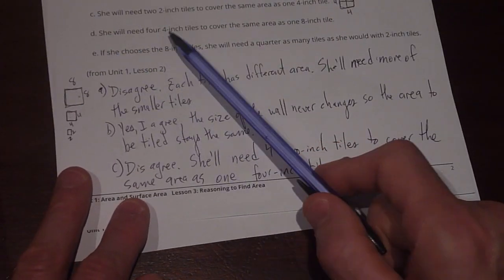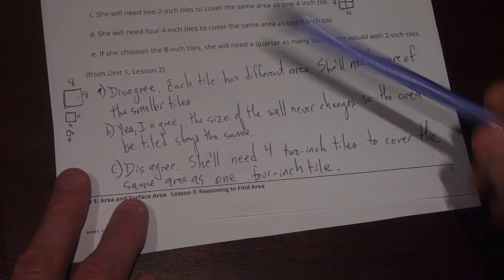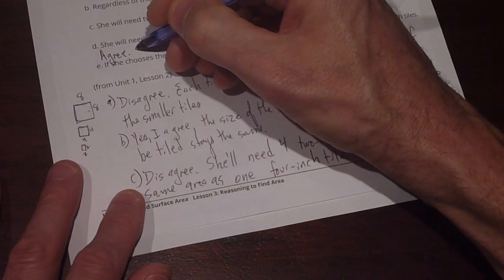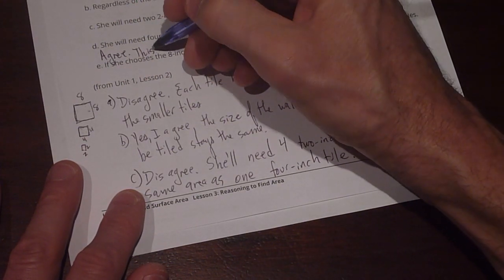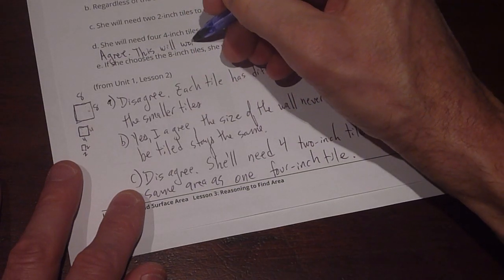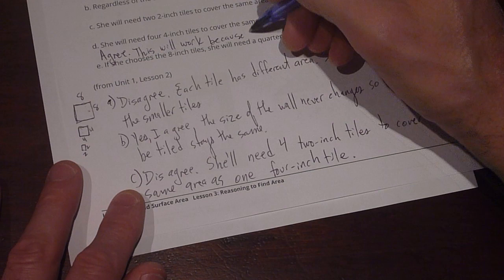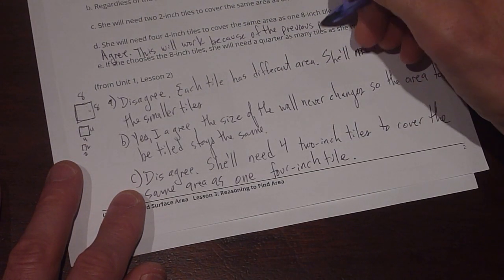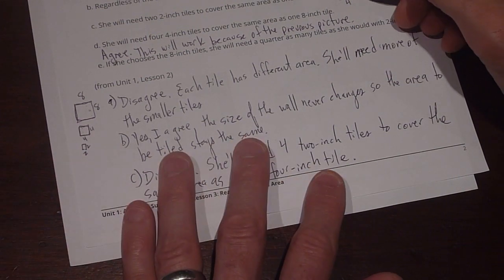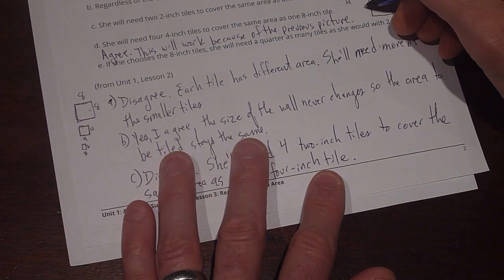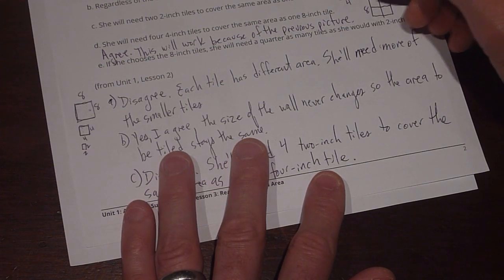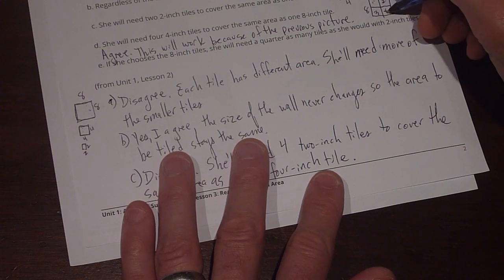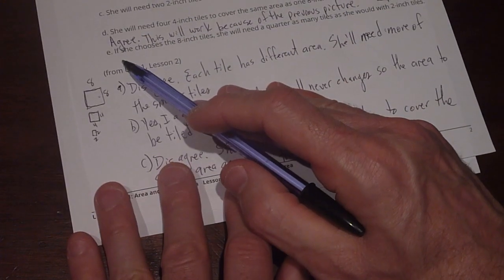Now D says she will need four 4 inch tiles to cover the same area as one 8 inch tile. I agree with that because of our previous statement. This will work because of the previous picture. I can draw another one here to say that with an 8 inch tile, 8 by 8, I can split it up into a 4 inch tile, 1, 2, 3, 4. So I need 1, 2, 3, 4 4 inch tiles. Split those in half to get that.